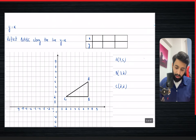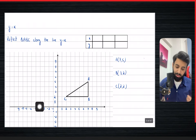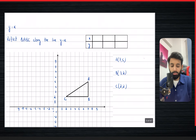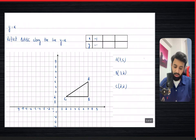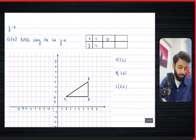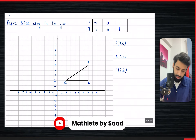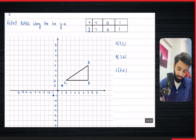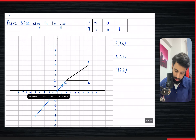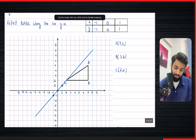Now we have to reflect along the line y equals x. Drawing y equals x is simple — whatever x is, y is the same, giving an upward-sloping line. To be safe, make a table: if x is minus one, y is minus one; x equals zero gives y equals zero; x equals one gives y equals one. Mark these three points and draw a line extending through them — that is the line y equals x.